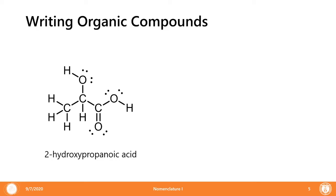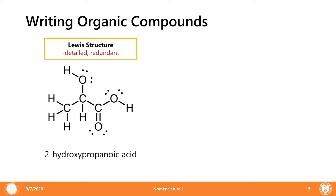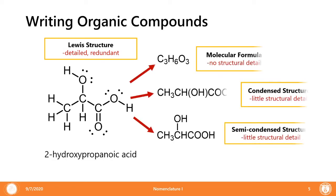So how do we write organic compounds? You may be familiar with the Lewis structure from general chemistry, but that's generally very detailed or redundant. You're also familiar with the molecular formula, which doesn't really give any structural detail — it's really just a collection of the atoms. Condensed structures provide little to no structural detail. Since atoms exist in 3D space, you'd expect them to look 3D, not just a collection of letters and lines.